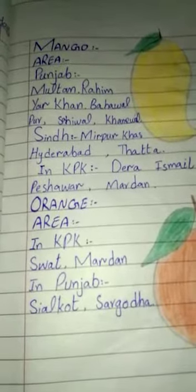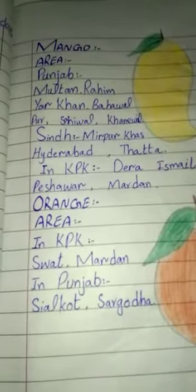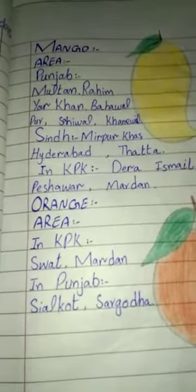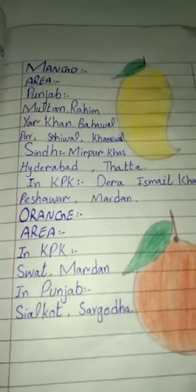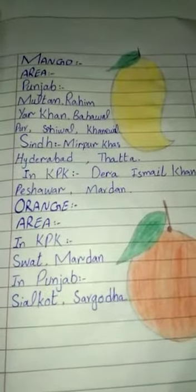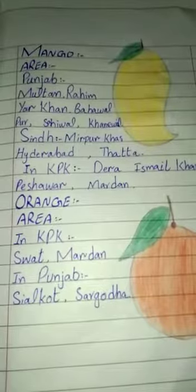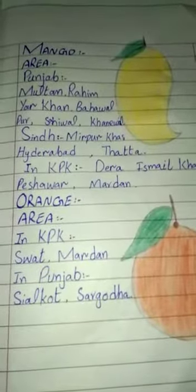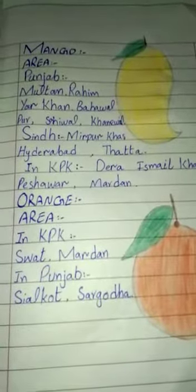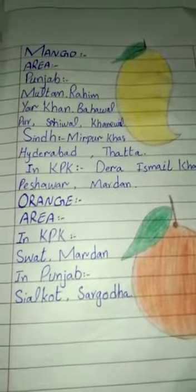Mango is also grown in Punjab and in KPK. In KPK, the areas include Dera, Ismail Khan, Peshawar, and Mardan. In these areas, mangoes are also grown and used.